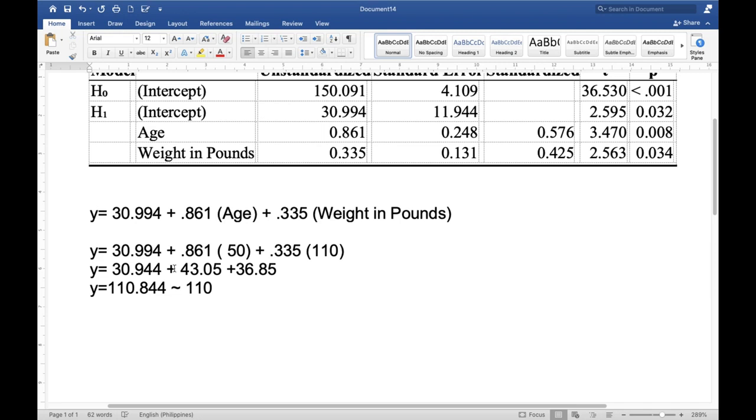30.994 plus 0.861 times 50 is 43.05 and 0.335 times 110 is 36.85. So 36.85 plus 43.05 plus 30.944 is 110.84 or roughly 110.